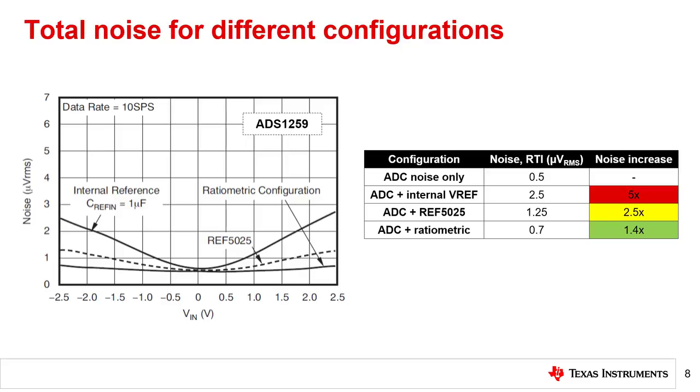In all of these configurations, however, it is important to remember that reference noise has such a noticeable effect on system noise because higher resolution ADCs are being used. These 24-bit converters already offer low noise performance, making the reference noise relatively more apparent to the system.